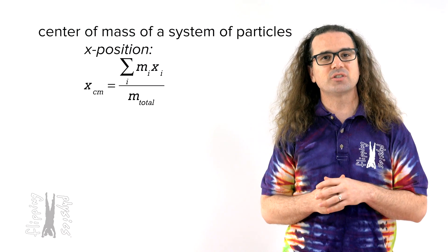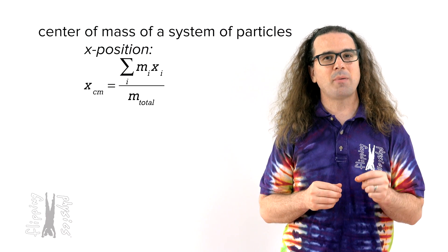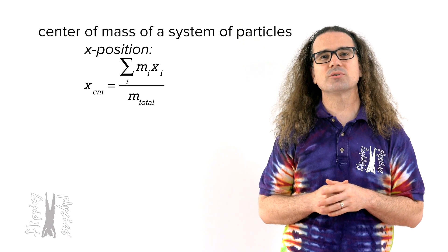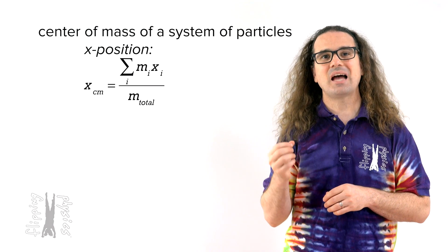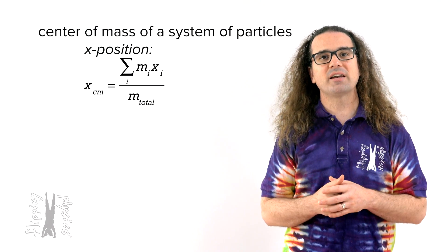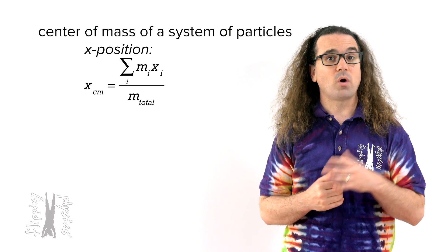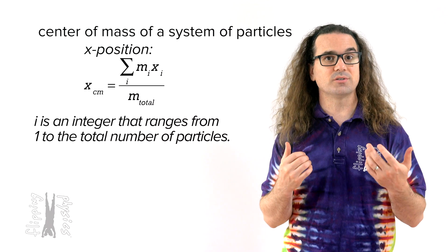Good morning. Previously we learned that the x-position center of mass of a system of particles can be described by the equation: x-position center of mass equals the sum of the mass of the i-th particle times the x-position of the i-th particle, all divided by the total mass of the system, where i goes from 1 to the total number of particles in the system.